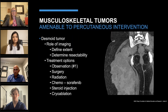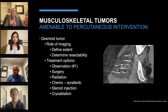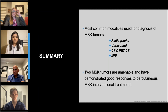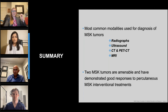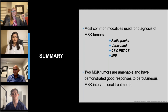The CT image on the right shows an enormous desmoid tumor in the gluteal region extending down into the thigh that recently underwent a staged cryoablation procedure with 20 different probes, seen here on an intra-procedural CT image with the surrounding ice ball. In summary, the most common modalities used for diagnosis of MSK tumors are radiographs, ultrasound, CT, PET-CT for bone metastases, and MRI. Each has significant value in its own right, and radiographs should never be undervalued — they're cheap, easy to get, and extremely helpful. There are two MSK tumors that do quite well with percutaneous interventional therapy: osteoid osteoma and desmoid tumor.